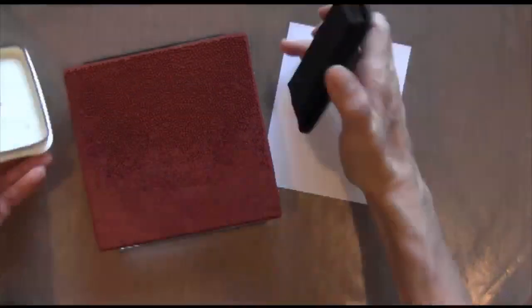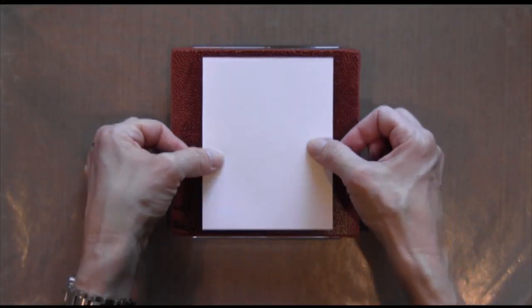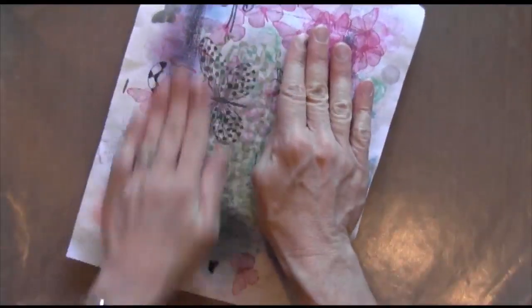I used a couple of stamps from Impression Obsession. This first one is called Gradation, and I inked it up with some black Memento ink and stamped it on my Neenah Solar White cardstock.